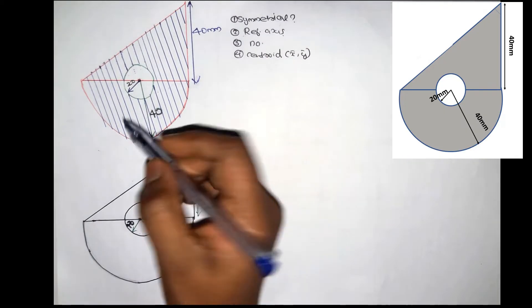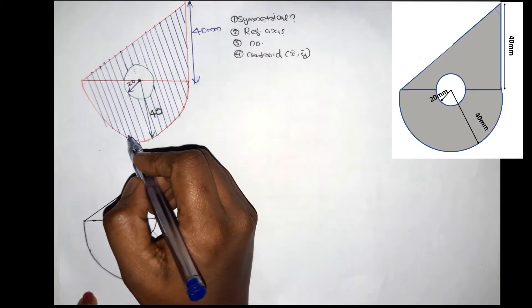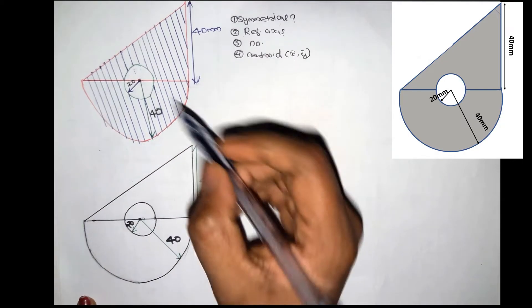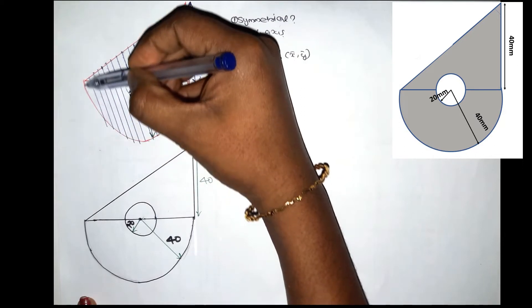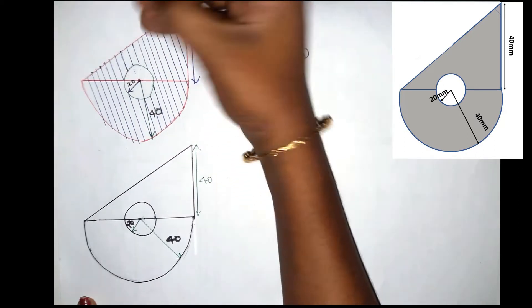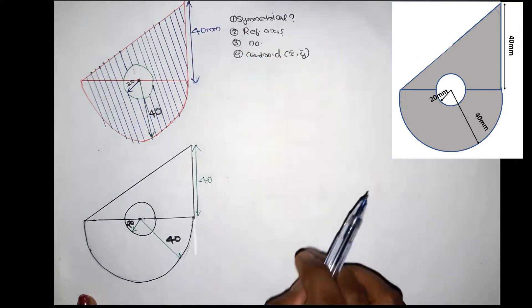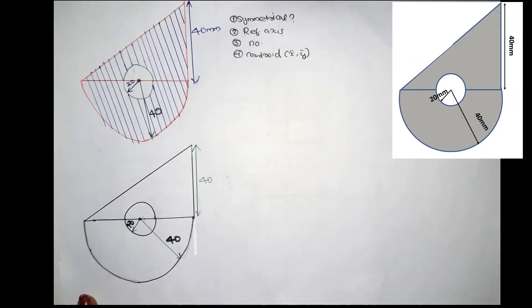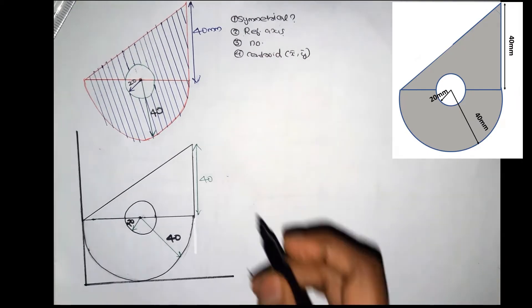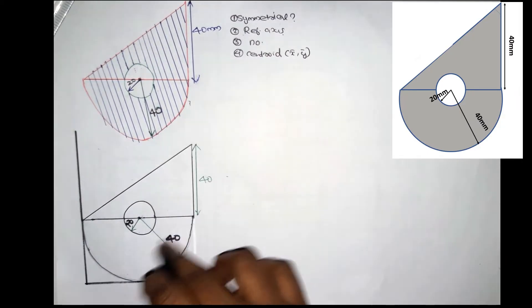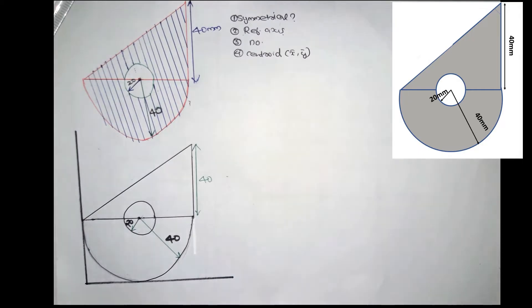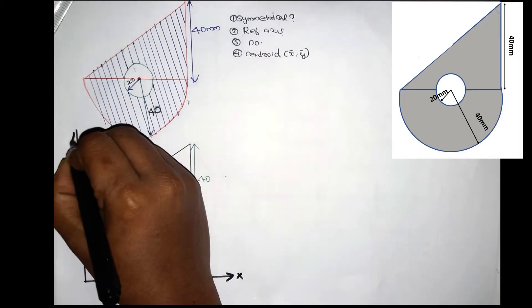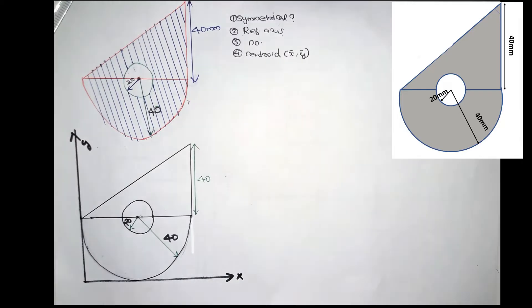How do we mark the reference axis? The x-axis is along the figure, and the y-axis is to the left. We mark the reference axis. This figure is to the right. We mark the x-axis and the y-axis.